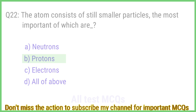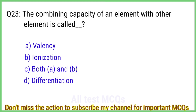Question number 23. The combining capacity of an element with other elements is called? The right answer is option A: Valency.